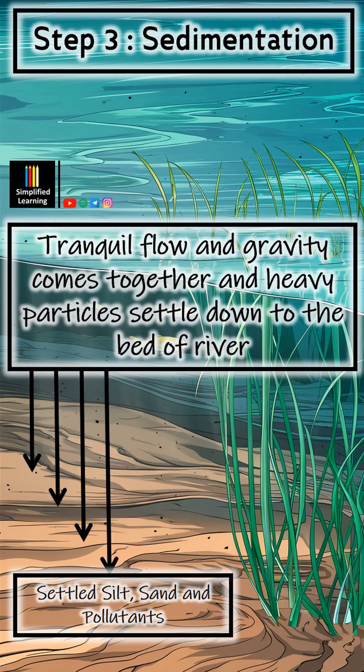The next step in self-purification is sedimentation. As water flows, heavier particles such as silt, sand, and some pollutants settle to the riverbed due to gravity. This process removes suspended solids and some attached pollutants from the water column, reducing the turbidity and improving the water quality.